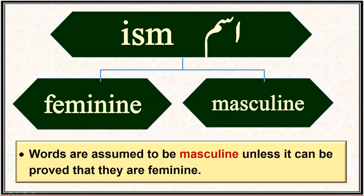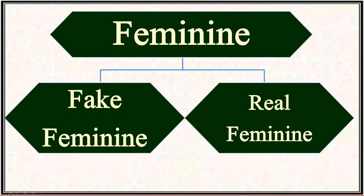It is a very simple formula: every ism found in the Quran will be considered masculine unless and until it is proven feminine. This is because the feminine isms used in the Quran are much fewer in number than the masculine. So if we can correctly identify the feminine words, all the rest will be categorized as masculine.